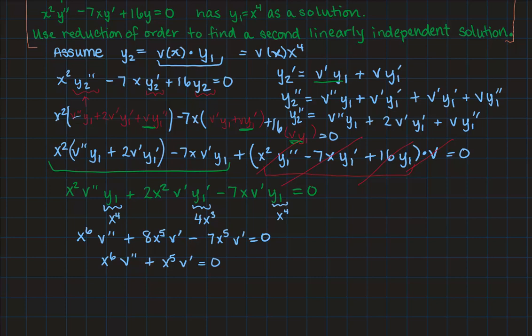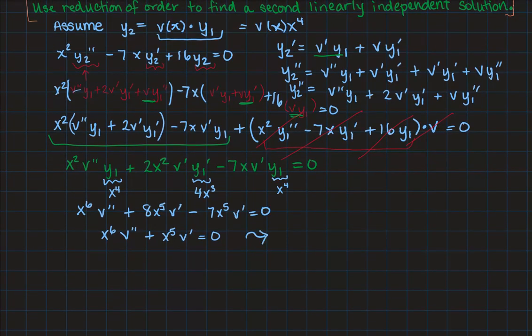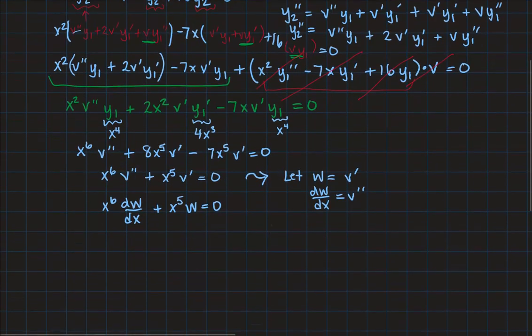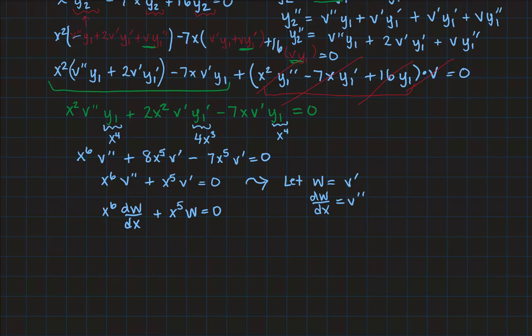So now I can convert this to a simpler first order differential equation by letting w be a new function that equals the derivative of v. And so now I'm going to write this so then dw dx would be v double prime. And so I get x to the sixth times dw dx plus x to the fifth times w equals 0. And I'm going to solve this differential equation. It should come out to be both first order and separable at the end of the day. So I'm going to start by dividing everything in sight by x to the sixth. Notice that could lose me a solution, but that's okay. dw dx plus w over x because I've divided by x to the sixth. And then I'm going to subtract from both sides.